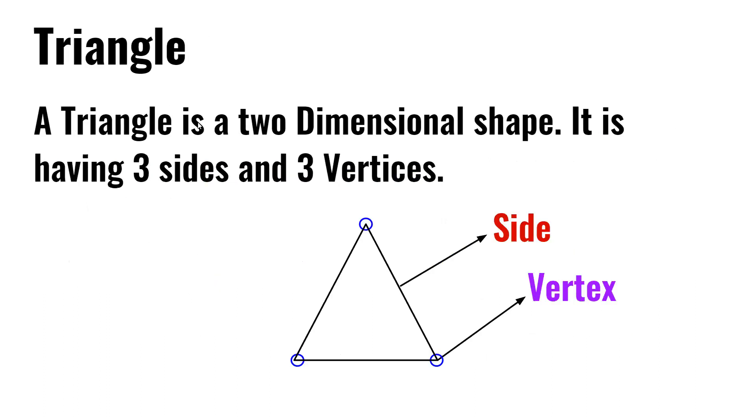A triangle is a two-dimensional shape. It has three sides and three vertices.